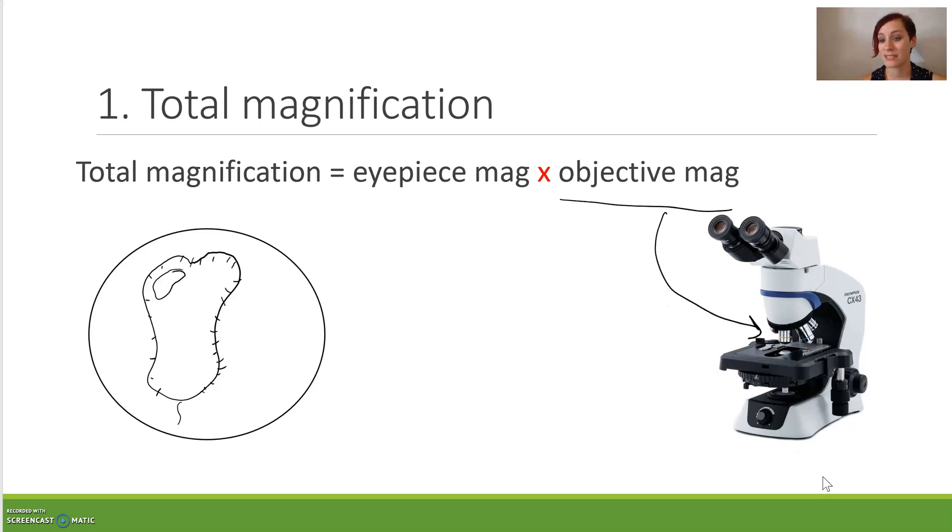Remembering that this down here is the objective lens and this is our eyepiece. Now eyepieces are generally by 10. So if I have the by 40 magnification objective lens, my total magnification will be 10 multiplied by my objective lens of 40, therefore giving us a total magnification of 400 times, or sometimes you see times 400. Either is acceptable.